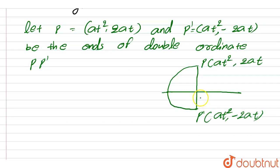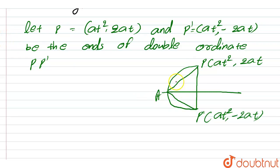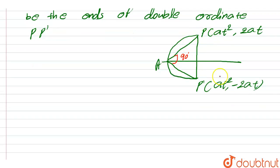The vertex is point A. We have to prove that angle PAP' is a right angle, that is, angle PAP' = 90°. Let's solve.